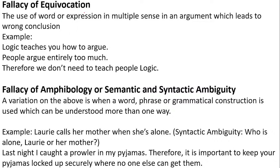Fallacy of equivocation: words or expressions with multiple senses are present in an argument, leading to a wrong conclusion. For example: 'Logic teaches you to argue. People argue entirely too much. Therefore, we don't need to teach people logic.' Here 'argue' is used in two different senses — in the first premise it means to put forward a reasoned point, and in the second it means to quarrel. This is fallacy of equivocation.